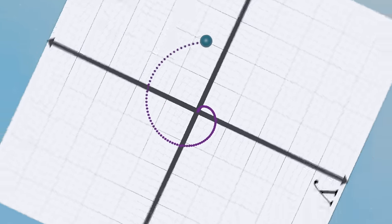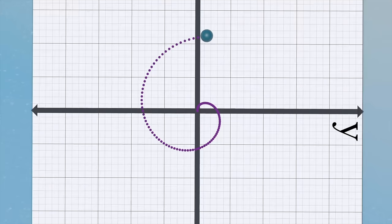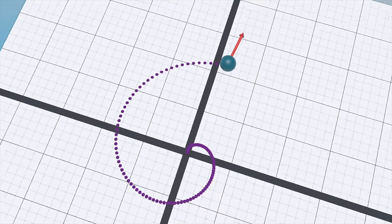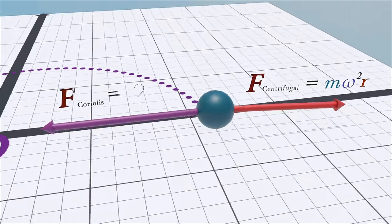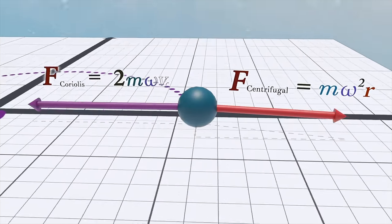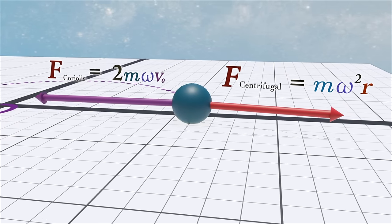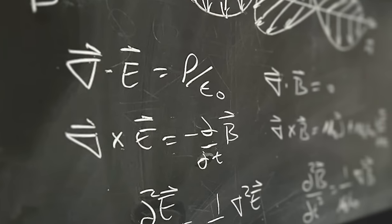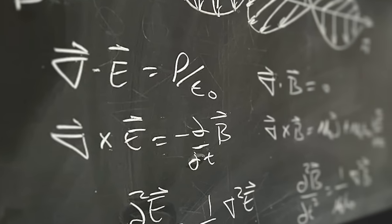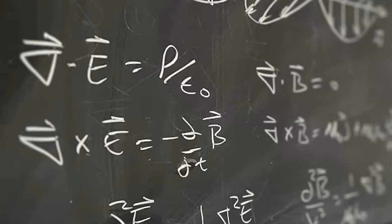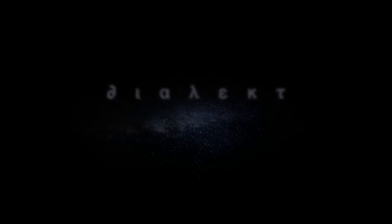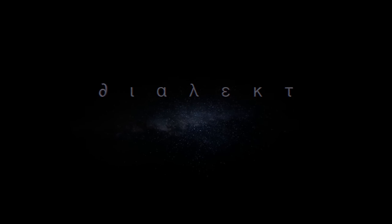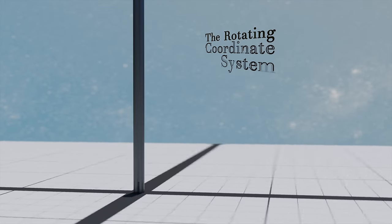Moreover, the mathematics of rotation have a tendency to crop up in rather unexpected places, including notably in the equations of Maxwell's electromagnetism. This is Dialect, and indeed if you want to master physics, then first you must master the rotating coordinate system.